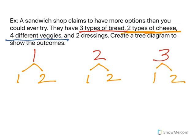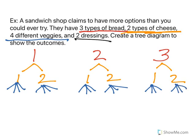Then we get into four veggies. So each one of these breaks into four. And now hopefully you can see how crazy these can be. Now we have two dressings. So if you have a lot of options, tree diagrams can be very large.